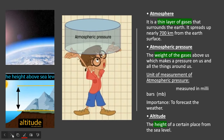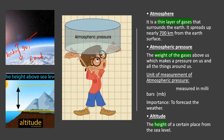First and foremost, there are some terms we must identify. The first term is atmosphere. When you look over here you can see the earth, and we can see there is a thin layer of gas around it. The atmosphere is basically this thin layer of gas, and it is something around 700 kilometers tall coming from the earth's surface.